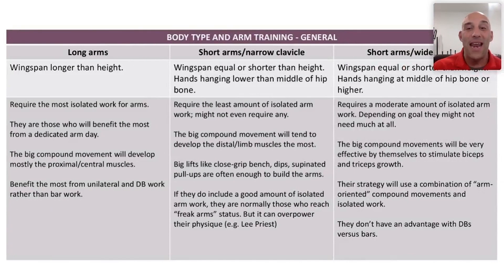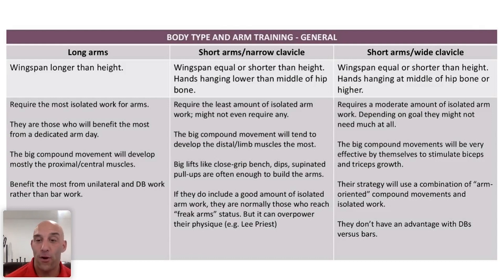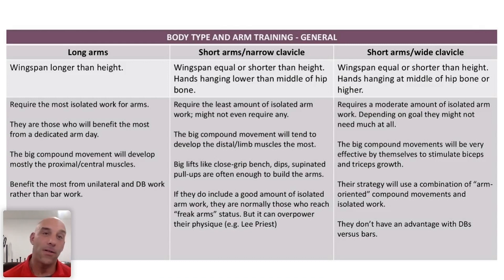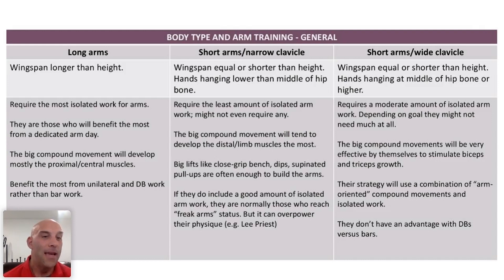Those who don't need as much direct arm work to get biceps and triceps to grow shouldn't invest in doing four exercises for both muscles — it would be pointless, since they already get growth from big pressing and pulling movements, maybe with one assistance exercise. On the other end of the spectrum, some people may need up to four bicep exercises to get optimal growth because mechanically they're less efficient at making biceps grow. That's the principle of training money.